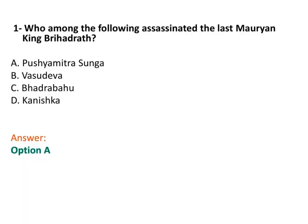Question number 1: Who among the following assassinated the last Mauryan king, Brihadratha? The answer is option B, Pushyamitra Shunga. He then started the Shunga dynasty and its capital was Pataliputra.